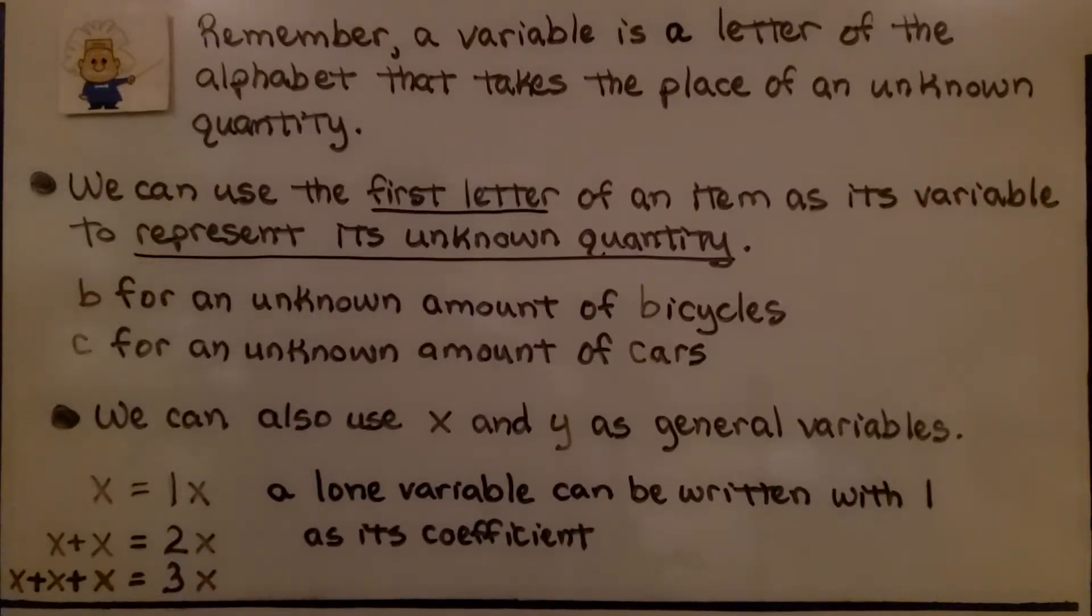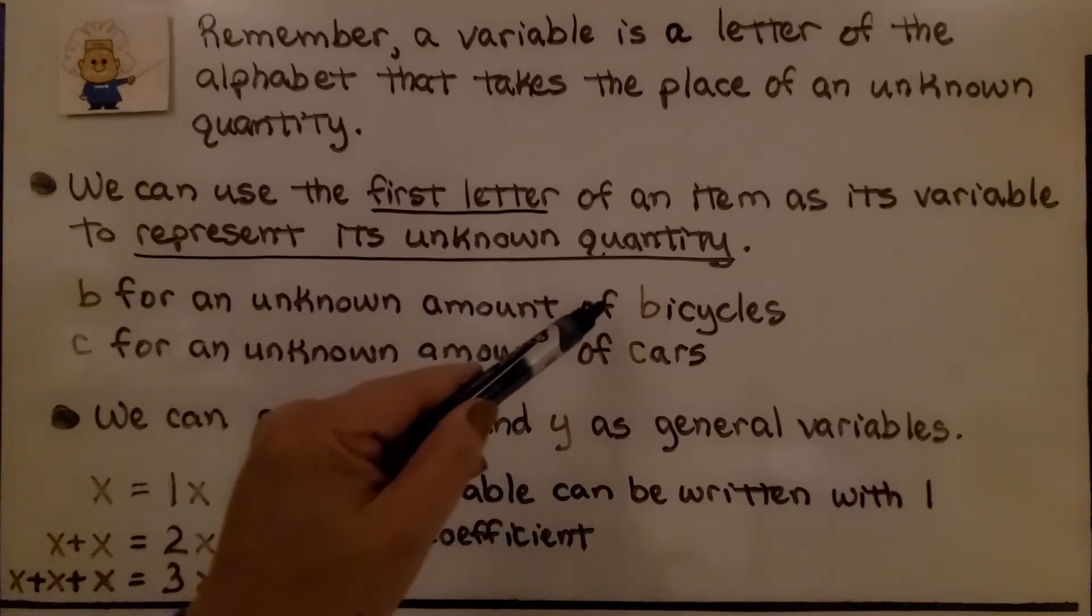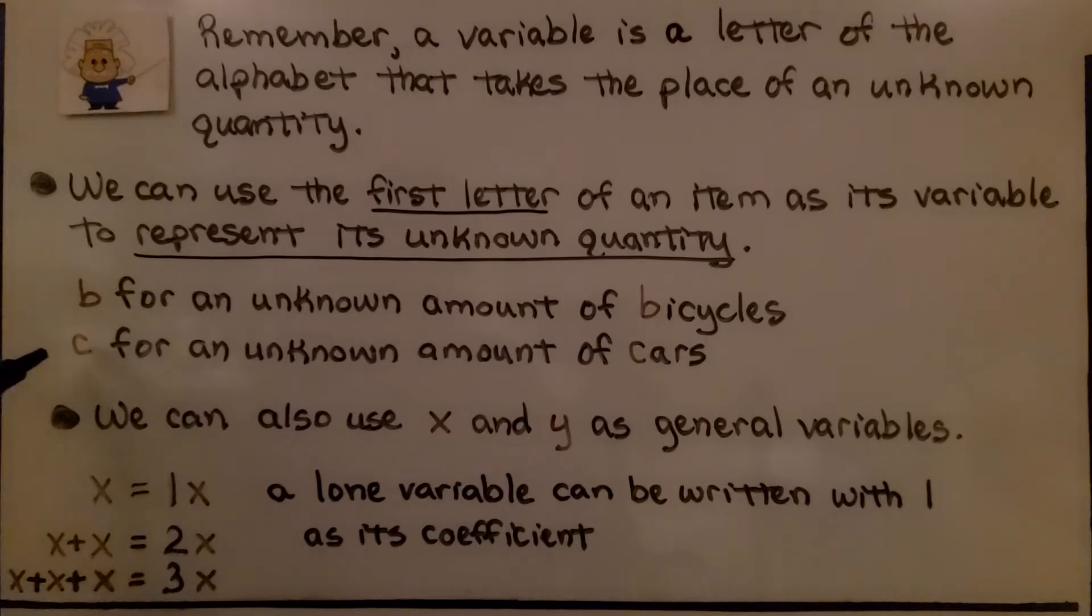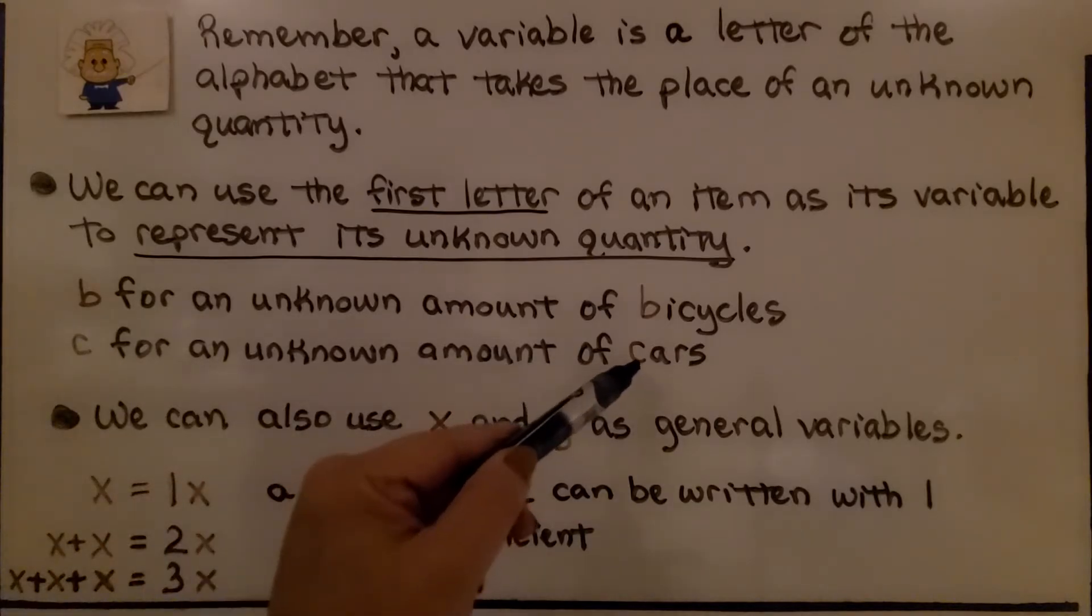Remember, a variable is a letter of the alphabet that takes the place of an unknown quantity. We can use the first letter of an item as its variable to represent its unknown quantity. We can use b for an unknown amount of bicycles. We can use c for an unknown amount of cars.